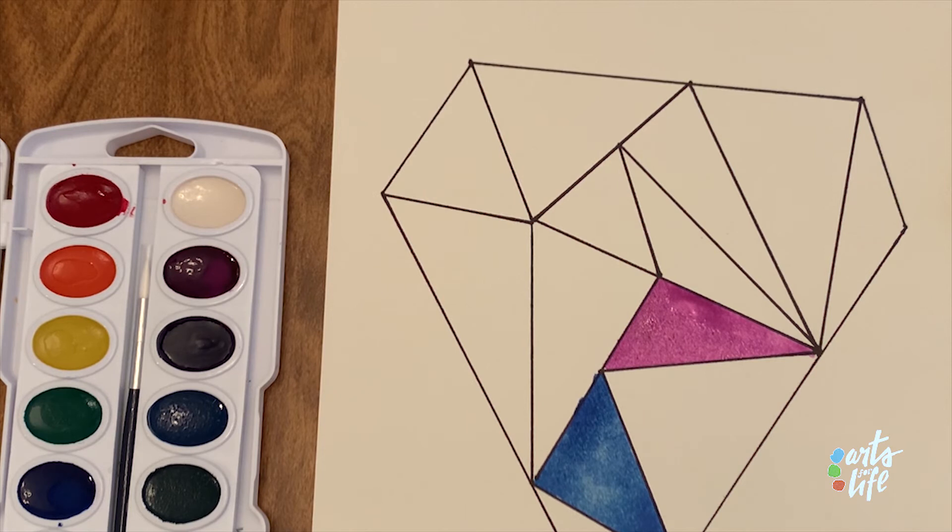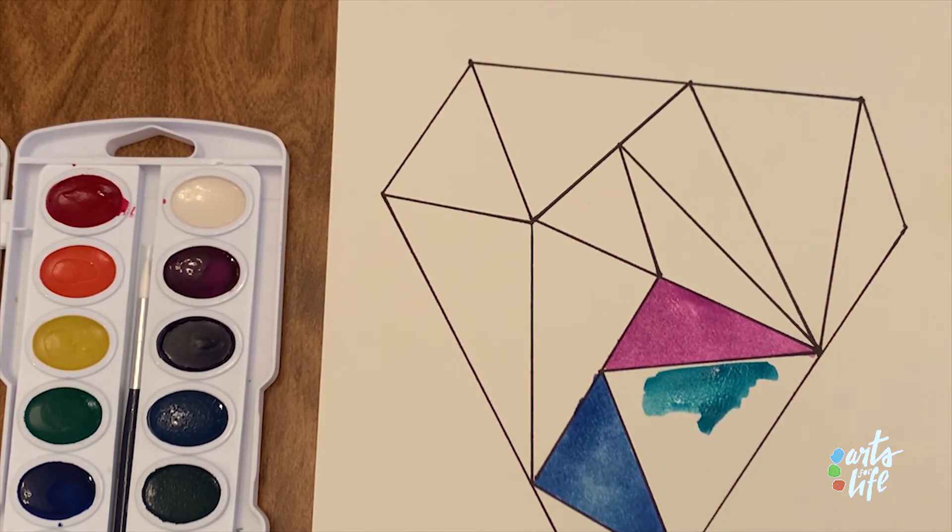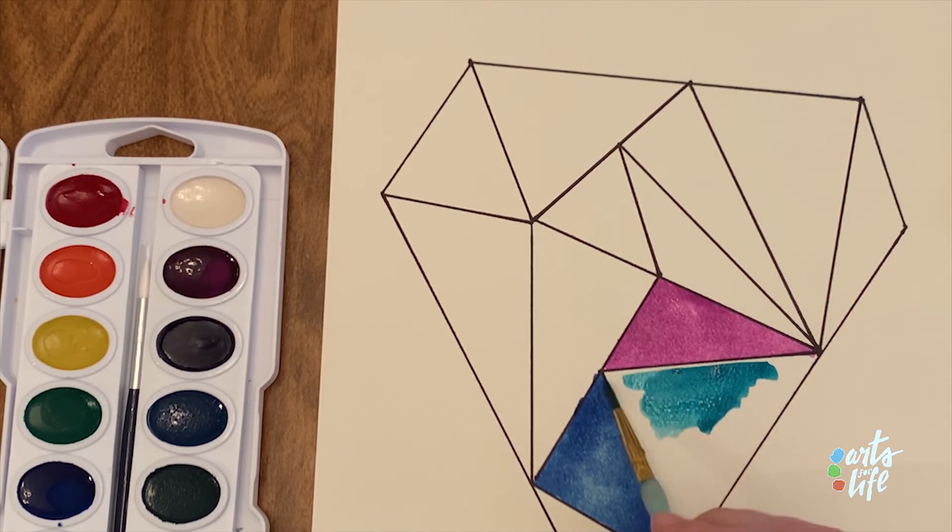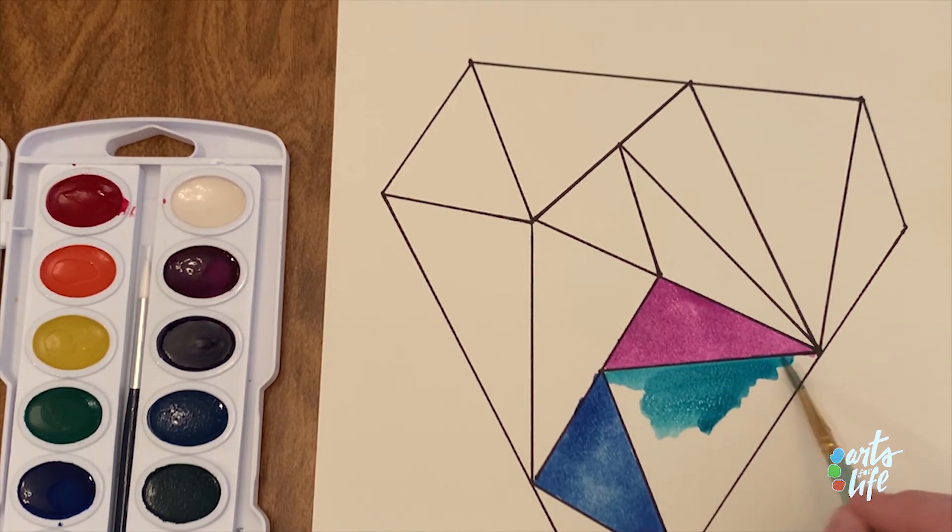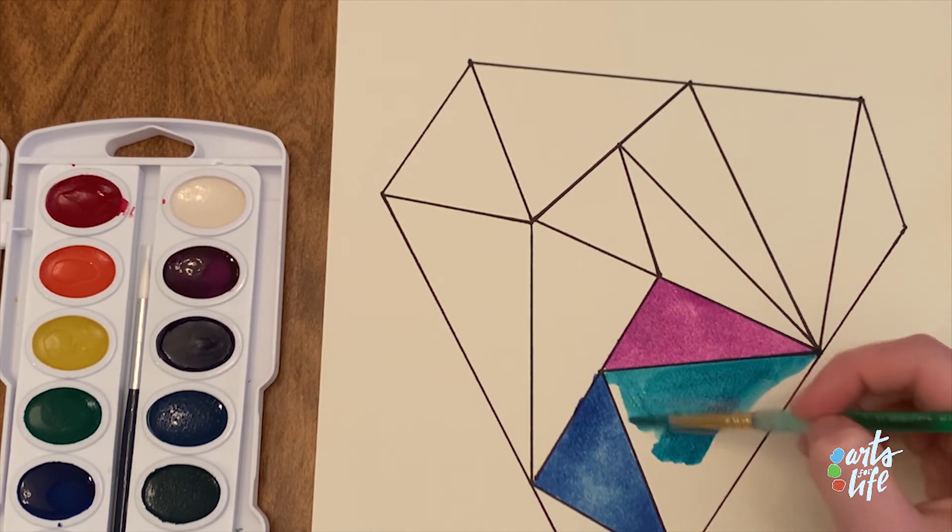And then I can pick another one. So I think that I am going to choose kind of like this bluish green teal color. Oh yeah, that looks nice next to our other colors. And I still have a good amount of pigment or paint on this brush. I'm just going to dip it in the water. Kind of spread it around a little bit.